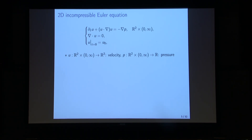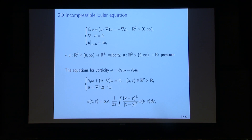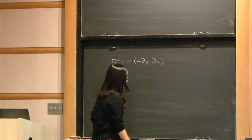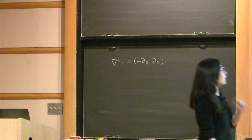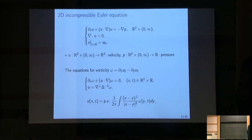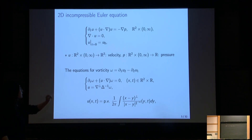Working with two unknown functions is oftentimes inconvenient, so we also consider the equivalent formulation for the vorticity. To drop one of the unknown functions, we take the two-dimensional curl, which is the gradient-perp dot product, where the gradient-perp is (∂₂, -∂₁). If you take this operator to the 2D Euler equation, the pressure will be dropped and the remaining part will be written as an equation for the vorticity, which is the two-dimensional curl of the velocity.